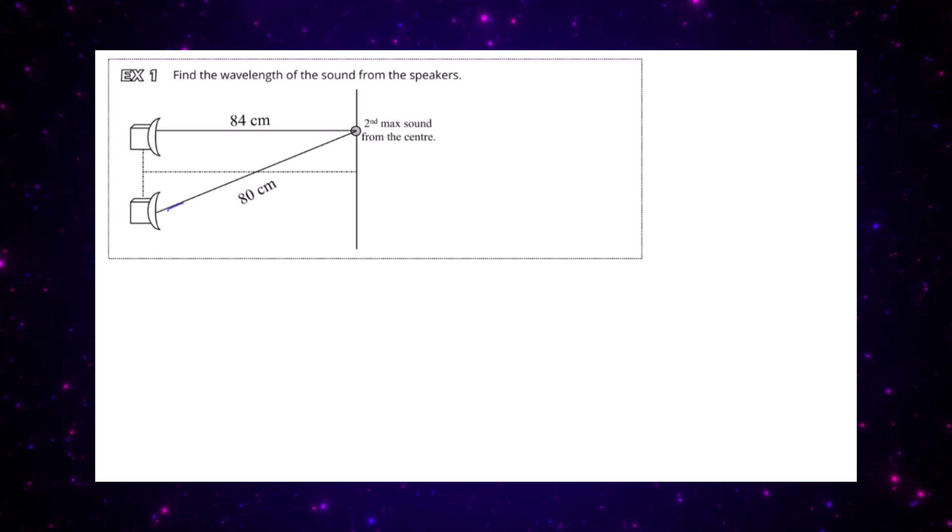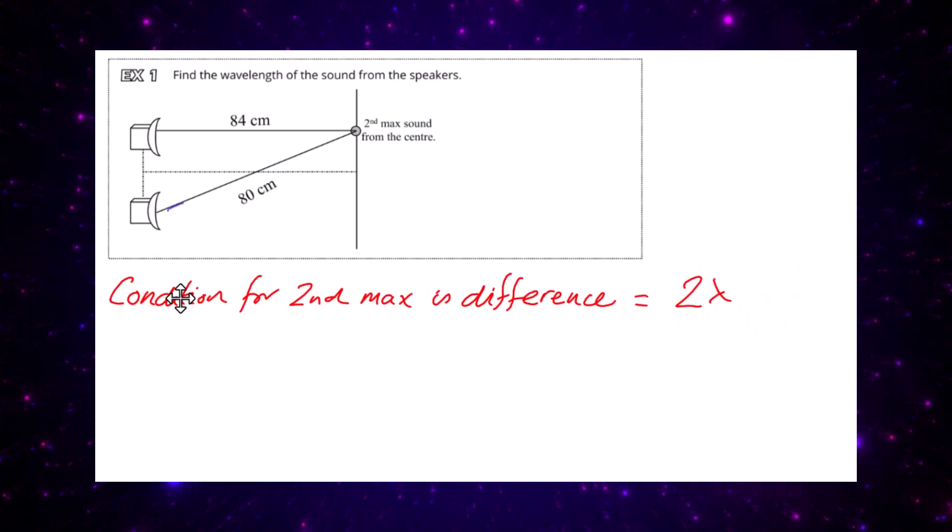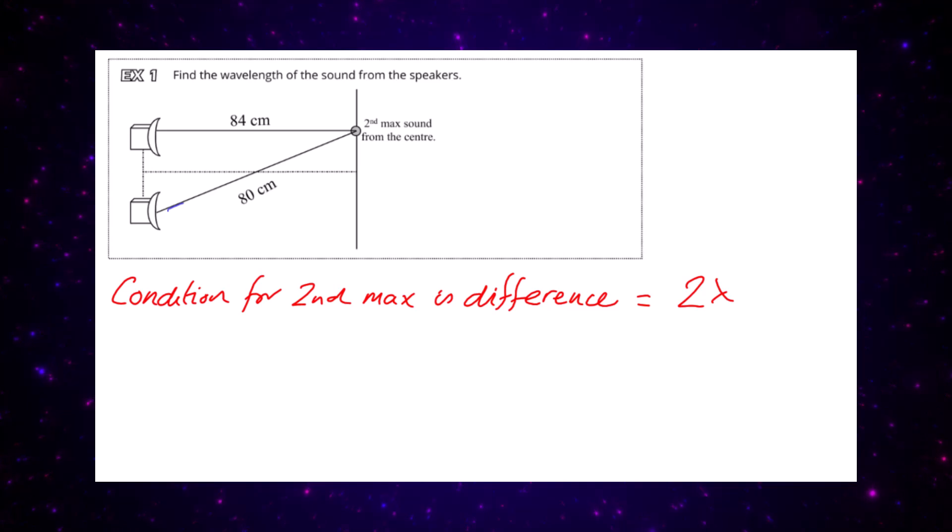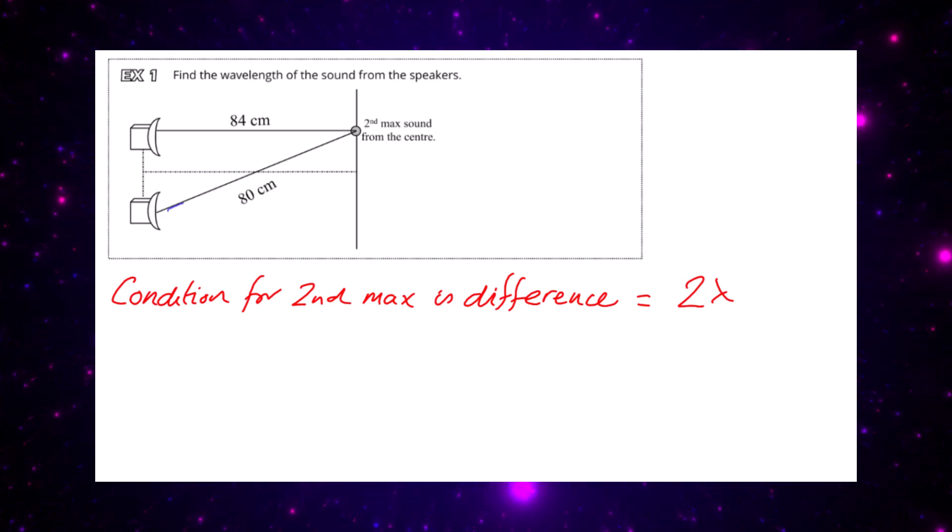What is the condition for the second maximum sound? Well, the condition for the second maximum sound is that the path difference must be two whole wavelengths, two lambda.